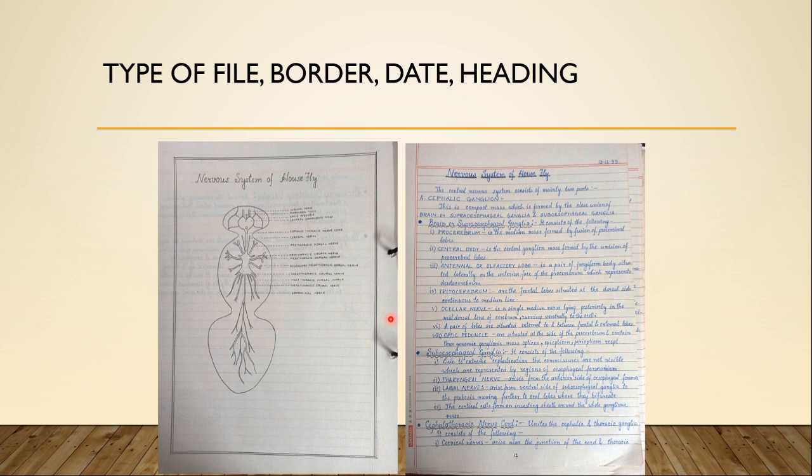Let's start with the type of file that we should use. There are many different types of files available in the market, but usually we use files made with loose pages with a double punch. In these files, the left side is white for diagrams and the right side is ruled for writing the description, observation, or findings.